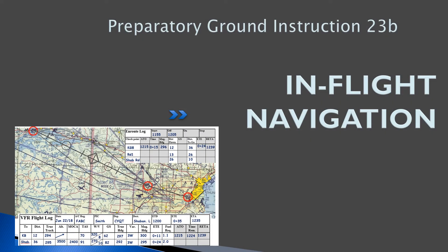Hello everyone. Welcome back to freepilotgroundschool.ca. This is the preparatory ground instruction for exercise 23B, in-flight navigation. Hopefully you've already gone through the ground school on how to do navigation and looked at the preparatory ground instruction for how to prepare a flight. At this point in your flight training, hopefully you've done a recreational pilot permit flight test already, and you're ready to learn how to navigate the aircraft in-flight from one point to another.